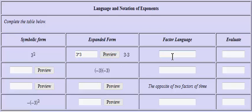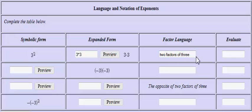In the factor language, because the threes are being multiplied, we call each of them a factor. So what you have is two factors of three, so you would type the words 'two factors of' and then the word 'three.' Then to evaluate the problem, since three squared simply means three times three, that answer would be nine.